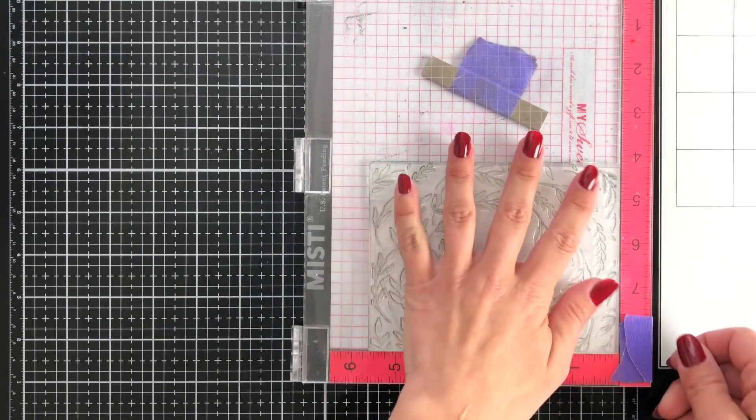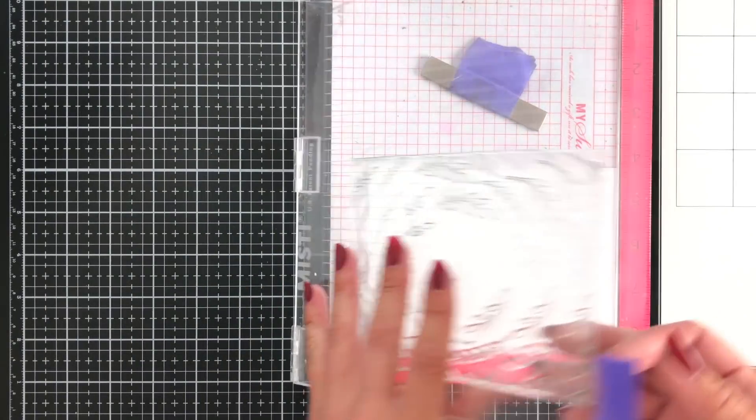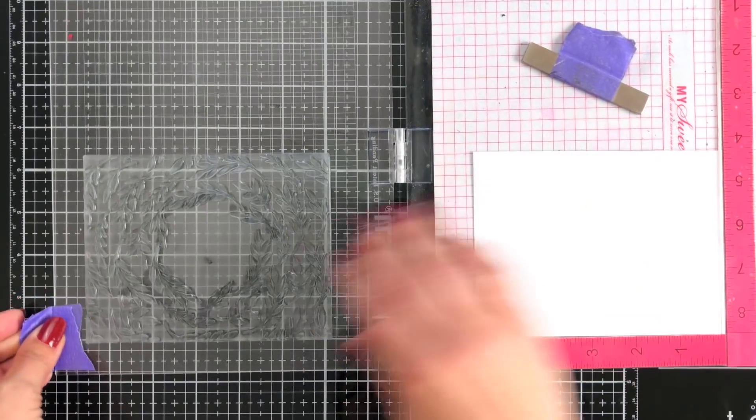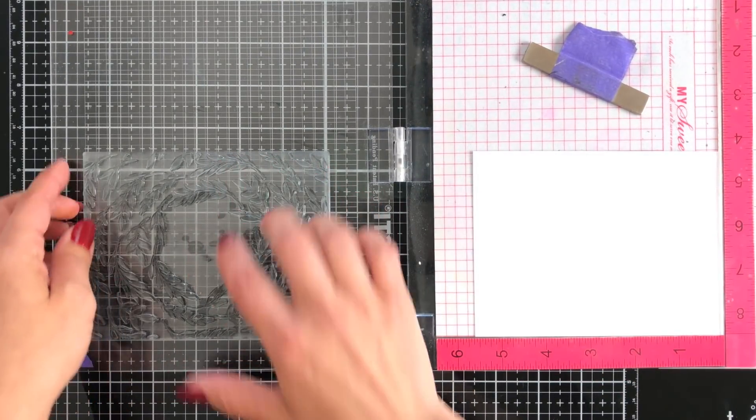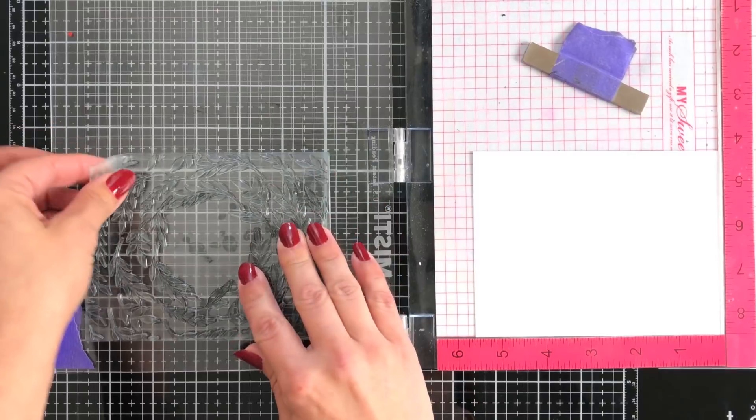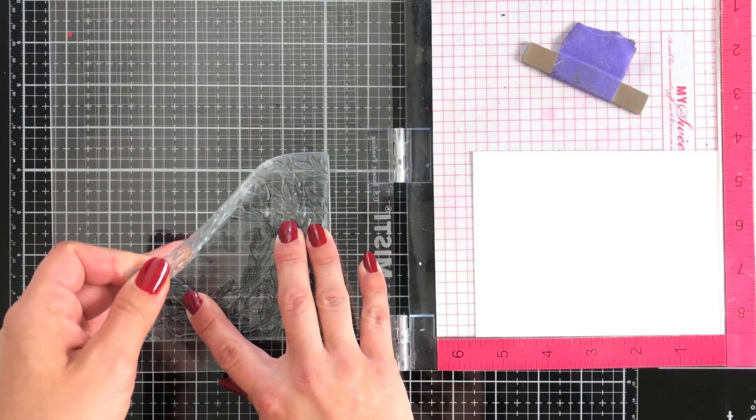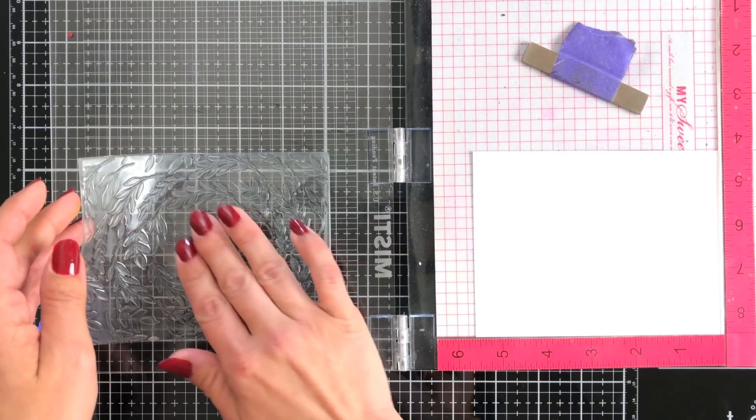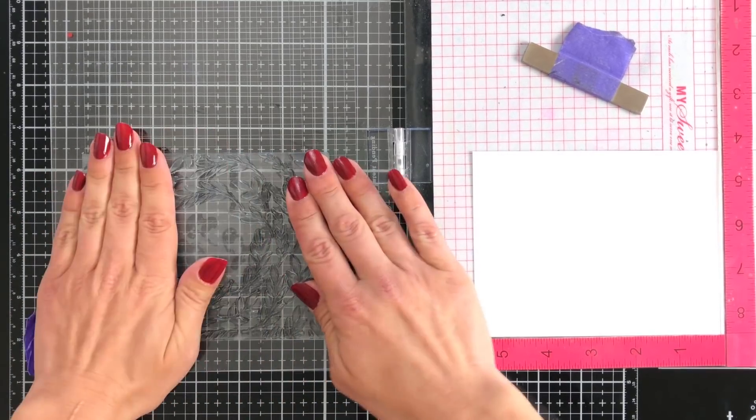I'm going to show you a little trick when stamping this. I have Bristol Smooth cardstock laid down in my MISTI and when you have stamps with that center, sometimes you can get a bubble. So once I have it set on the door of my MISTI I'm just going to peel up that one corner until I see all of those bubbles gone and push that down.